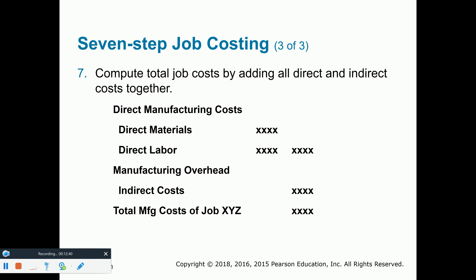Now the journal entries. There are three types of costs allocated to each job: number one, direct materials; number two, direct labor; number three, overhead — which includes all indirect costs. Indirect costs could also include indirect materials and indirect labor. Those are the three types of manufacturing costs: direct materials, direct labor, and overhead including all the indirect costs.